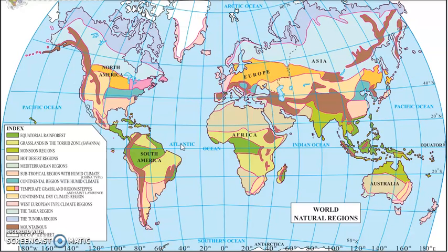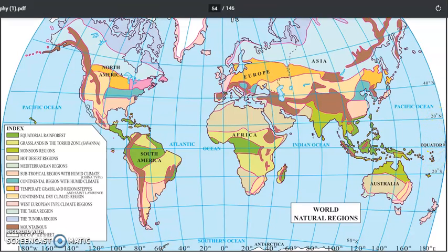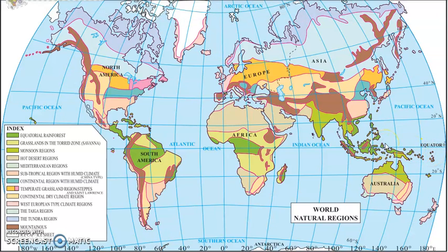Climatic regions are divided into four types: low latitudinal region, mid latitudinal region, high latitudinal region, and highland altitudinal regions. Looking at this world natural regions map, the equator is at zero degrees. From the equator to 20 degrees north and 20 degrees south, this area is covered by the low latitudinal region, which is very close to the equator and has very hot temperatures.